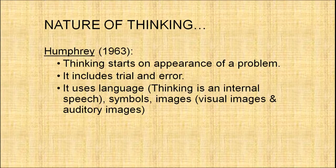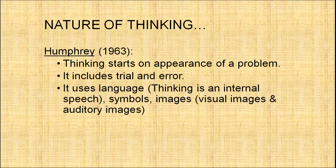Humphrey also said that thinking uses language — it is said that thinking is an internal speech. When we think about anything, we need a kind of language for internal speech; knowledge of language is required to think upon anything. Thinking also uses symbols and images. Images may be visual images — for example, if I saw something and now I am thinking about that thing — or auditory images, such as when I heard a conversation somewhere and am now recalling that discussion. These are the characteristics of thinking described by Humphrey in 1963.